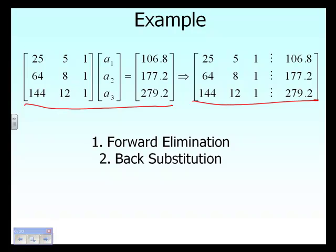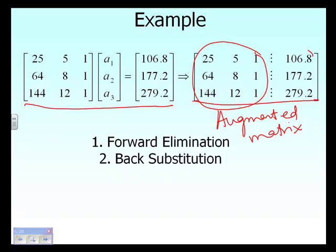We're going to write the augmented matrix. The difference between the matrix form of the equations and the augmented matrix is that you write down your coefficient matrix here, and then you write your right-hand side vector here. You're not showing what the unknowns are, but it is understood there are three rows and four columns, and the fourth column is your right-hand side vector.